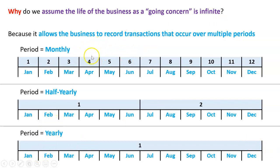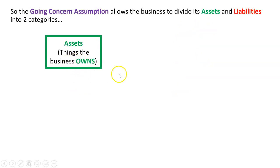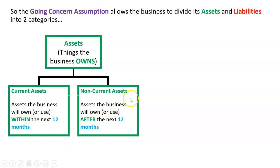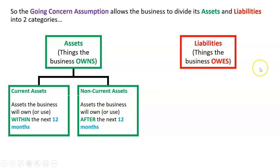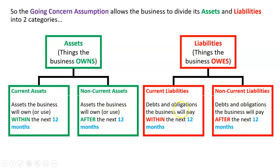The reason why we have a going concern assumption is that we can now assume transactions will occur into the future over multiple periods. Fundamentally, it allows us to divide our assets and liabilities into two groups. Assets are the things the business owns — the going concern assumption lets us break those into current assets, which the business will own or use within the next 12 months, and non-current assets, owned or used after the next 12 months. Similarly for liabilities — the things the business owes — we split those into current liabilities, paid within the next 12 months, and non-current liabilities, paid after. Without a going concern assumption, everything would be current, which doesn't make sense. We assume the business exists after 12 months — in fact, forever — allowing us to have two clear sections on the balance sheet for both assets and liabilities: current and non-current.